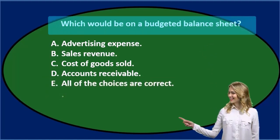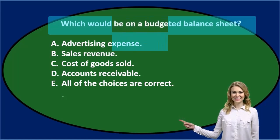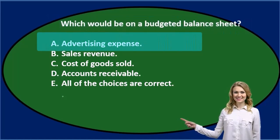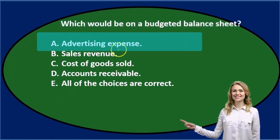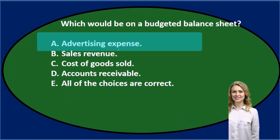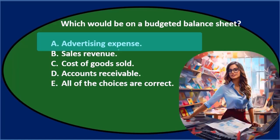Which would be on a budgeted balance sheet? A. Advertising expense — the fact that it says expense would typically mean it would be on the income statement. Although we're talking about a budgeted balance sheet, most of the rules generally apply: budgeted income and expenses go on the income statement, while budgeted assets, liabilities, and equity go on the balance sheet. So advertising expense probably wouldn't be on the balance sheet.